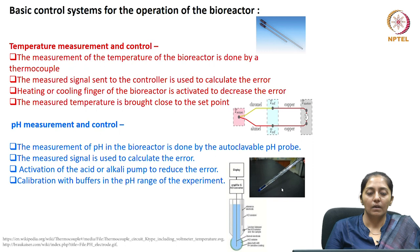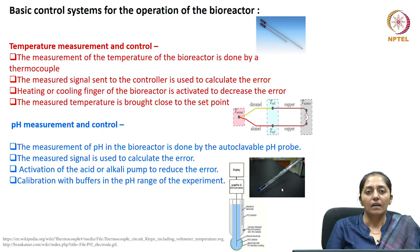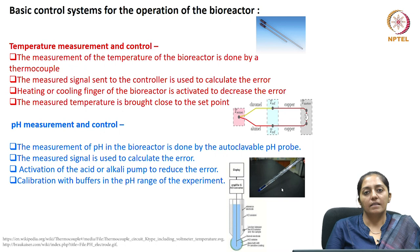For pH measurement and control, a pH probe — generally a glass body probe — is used. The glass bulb's bottom surface is selectively permeable to hydrogen ions, and the potential difference created between the reference electrode and the sensing electrode is directly measured as the pH of the broth. For pH control, the measured signal is used to calculate the error, and the activation of the acid or base pump is carried out automatically to reduce this error. The pH probe requires regular calibration with acid and alkali.